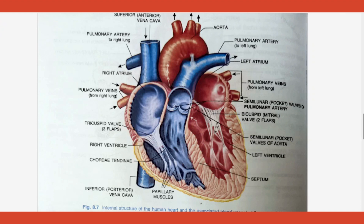From the left ventricle, blood should go to all the cells of the body. Whenever blood is going away from the heart, it is always an artery. So the artery's name is aorta. The aorta is branched — different branches go to different parts of the body and give oxygenated blood to cells. Cells need oxygen for breaking down glucose — that process is called respiration. One branch of the aorta gives blood to the heart itself, and that is called the coronary artery.